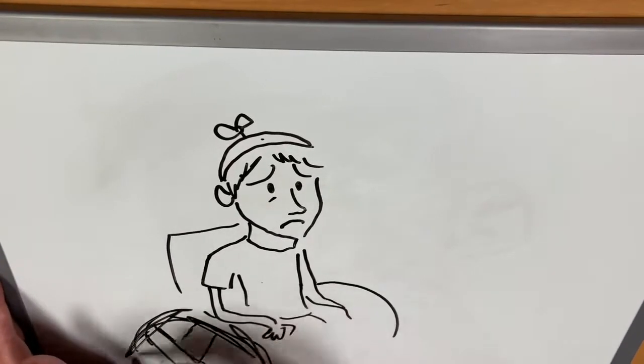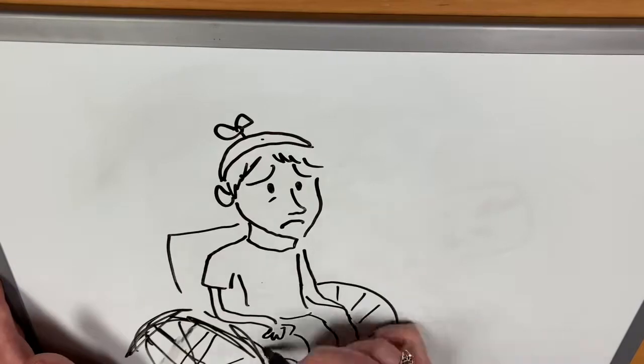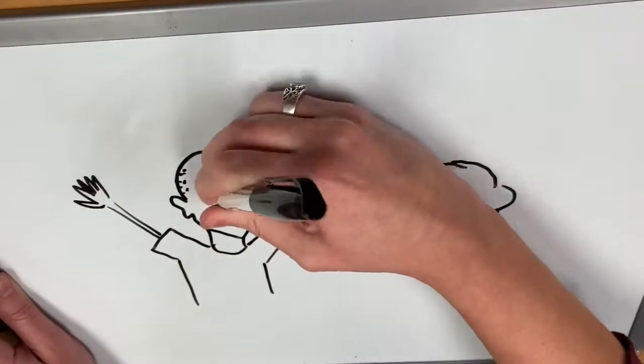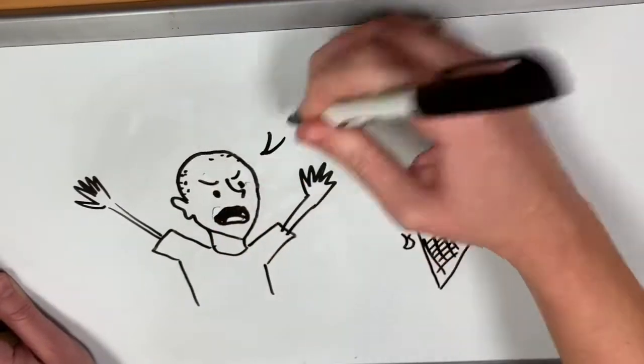During Salk's time, there were many misconceptions about vaccines, as well as polio. Many people thought vaccines caused disease, and scientists at one point believed that ice cream caused polio.